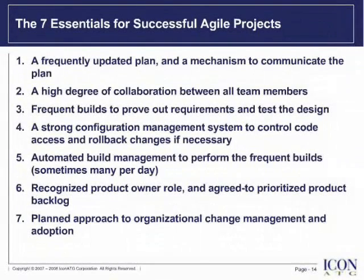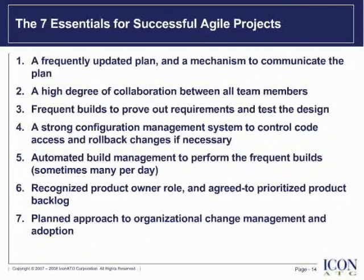The seven essentials for successful Agile projects. In reality, there are innumerable reasons for successful Agile projects, but we'll focus on these seven for the purposes of this webcast. Number one: a frequently updated plan and a mechanism to communicate the plan. Number two: a high degree of collaboration between all team members. Number three: frequent builds to prove out requirements and test the design. Number four: a strong configuration management system to control code access and rollback changes if necessary. Number five: automated build management to perform the frequent builds, sometimes many per day. Number six: a recognized product owner who agrees to prioritize the product backlog. Number seven: a planned approach to organizational change management and adoption.